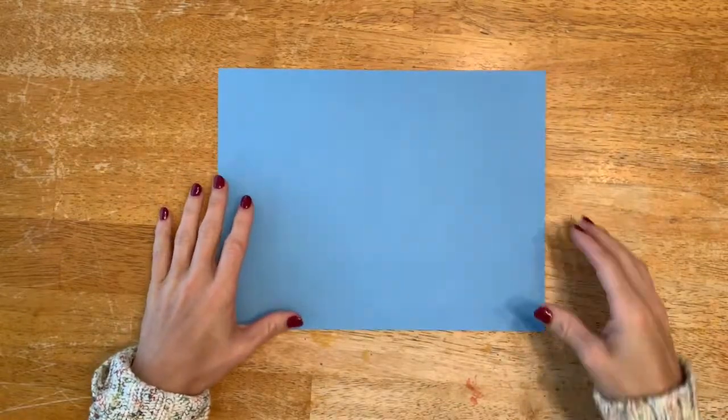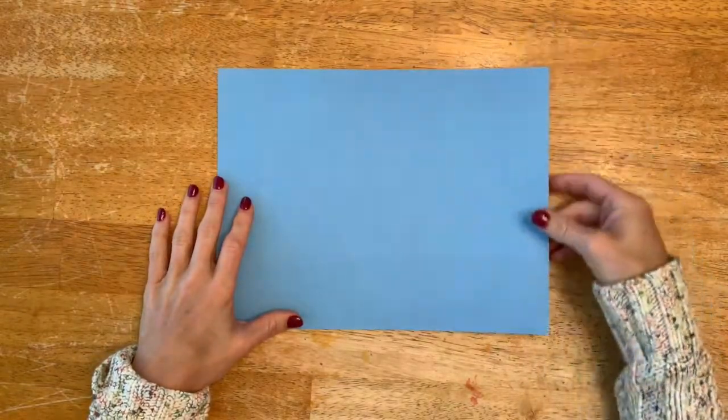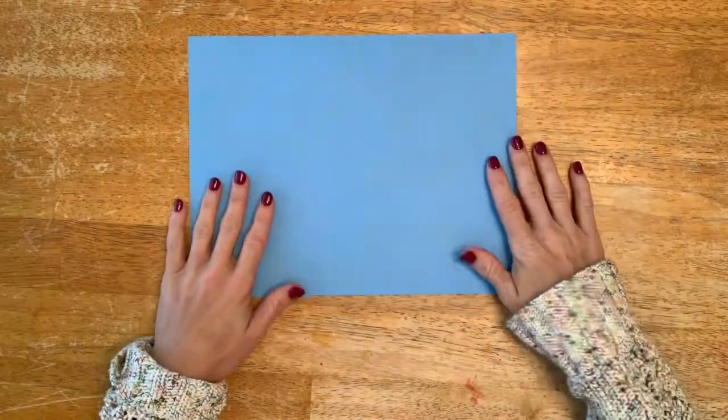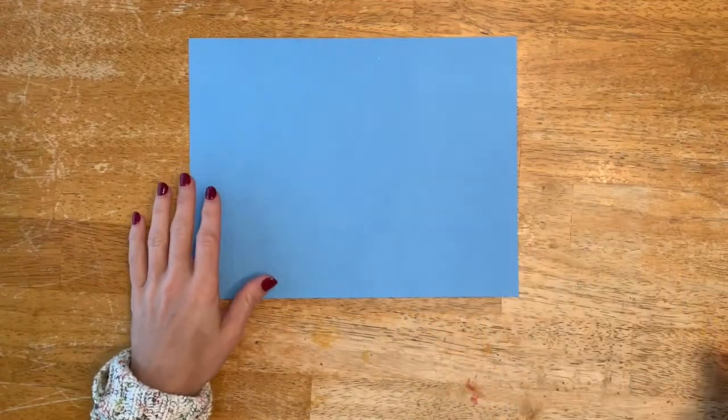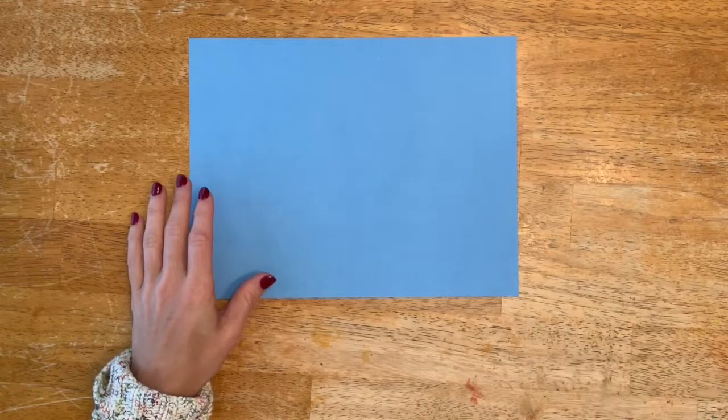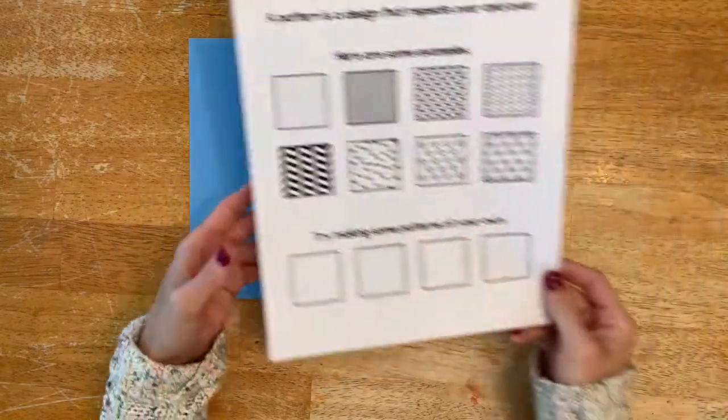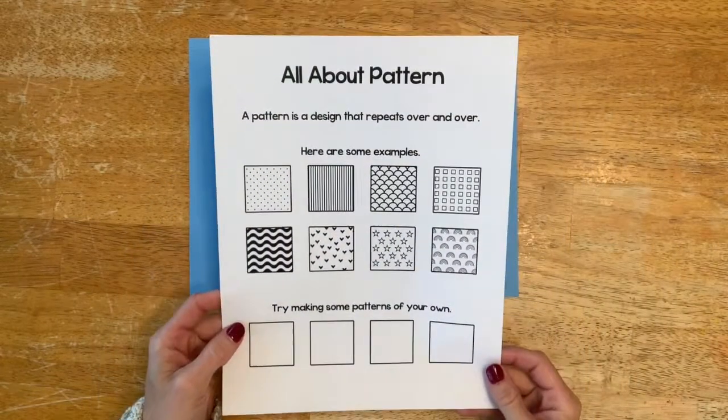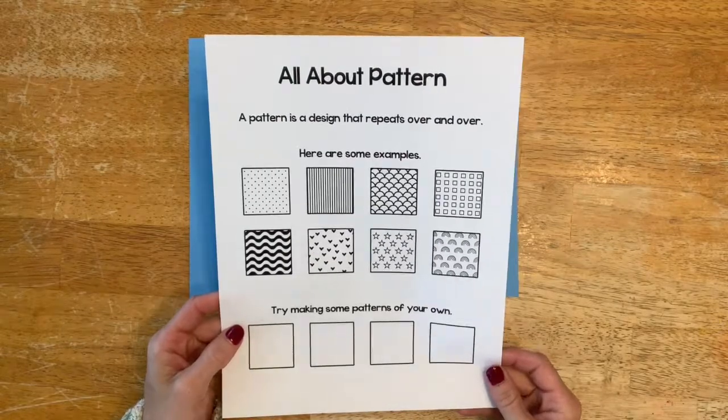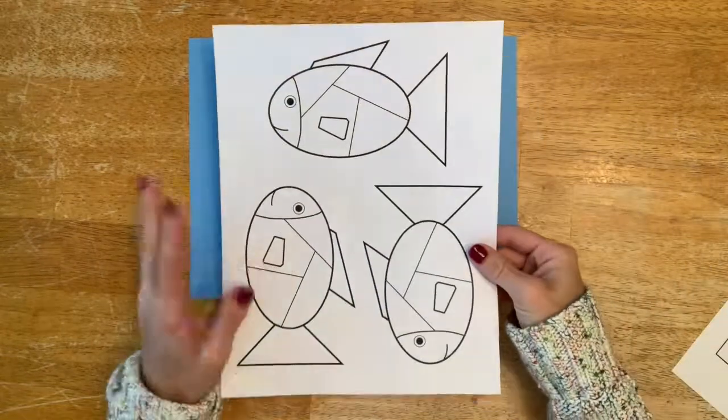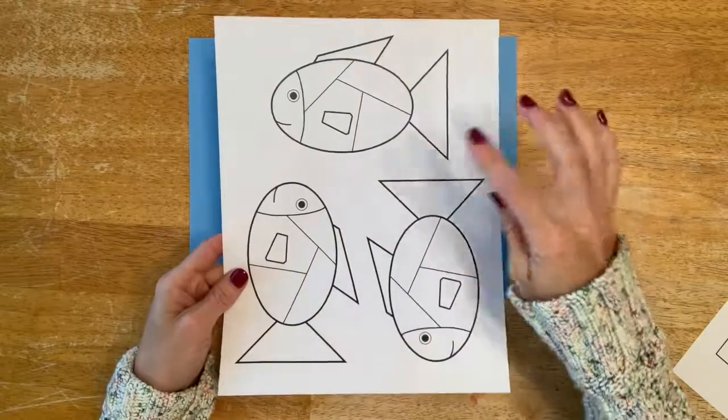The lesson that we're going to work on today is a kindergarten lesson on pattern. I'll go over the materials that you need to have. This one will start out with a worksheet, it is all about pattern. This worksheet and these fish are going to be used, and each student needs one of the fish.